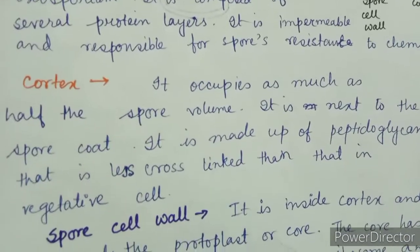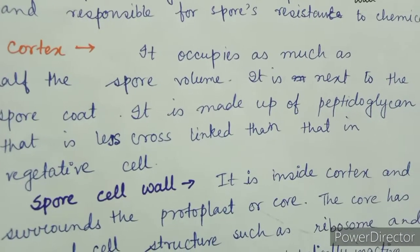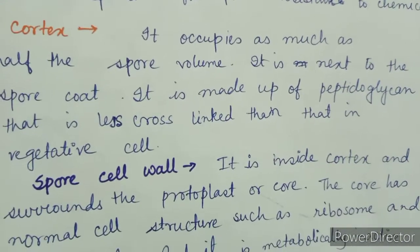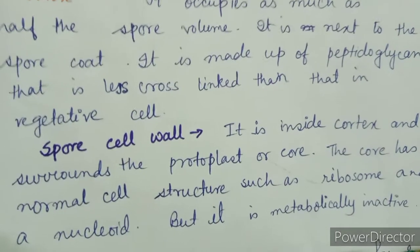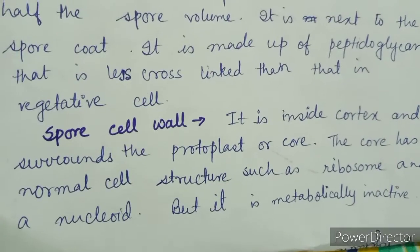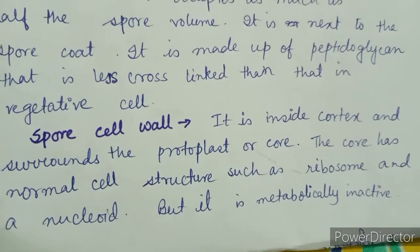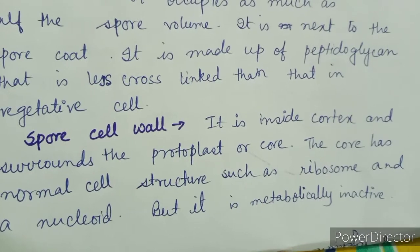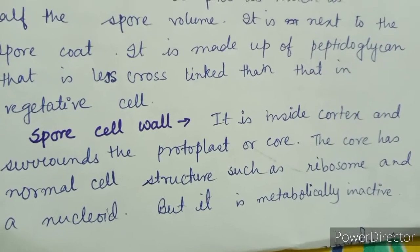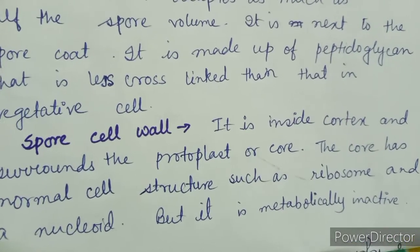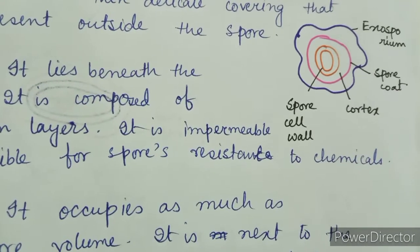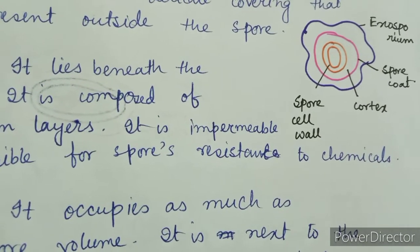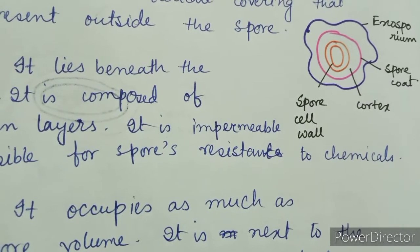The last part is the spore cell wall. It is inside the cortex and surrounds the protoplast or core. The core has a normal cell structure such as ribosomes and a nucleoid, but it is metabolically inactive.